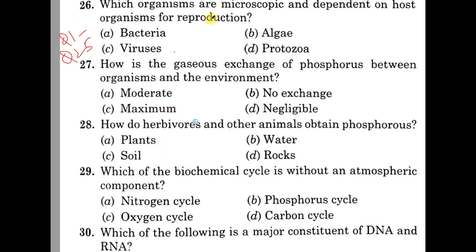Which organisms are microscopic and dependent on a host organism for reproduction? Option A: Bacteria, B: Algae, C: Viruses, D: Protozoa. This is a very simple question, a bouncer for you. The correct answer is option C, Viruses. Viruses are also called obligatory intracellular parasites.